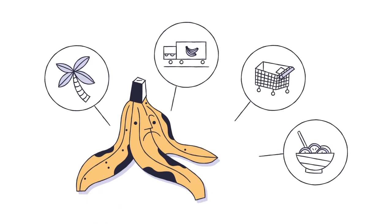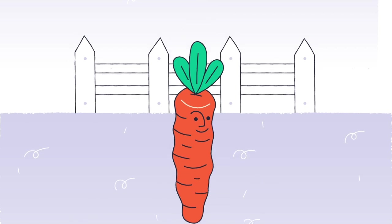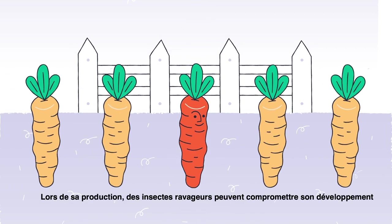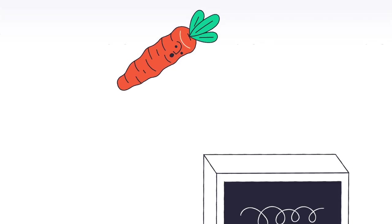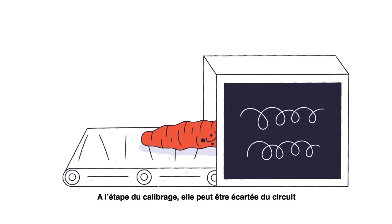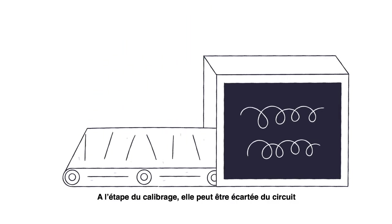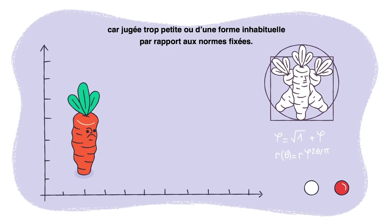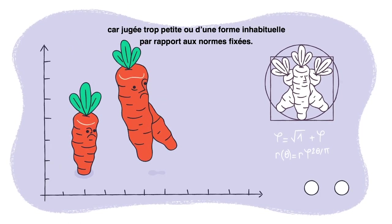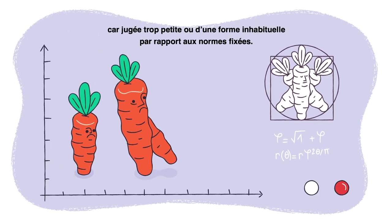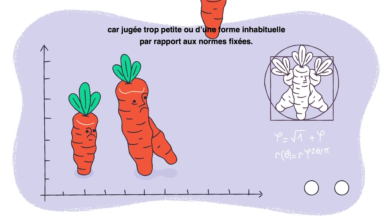Take this carrot. During production, crop insects can compromise its development and lead to its loss. Then at the calibration stage, a carrot can be rejected if it's too small or has an unusual shape compared to the required standards.